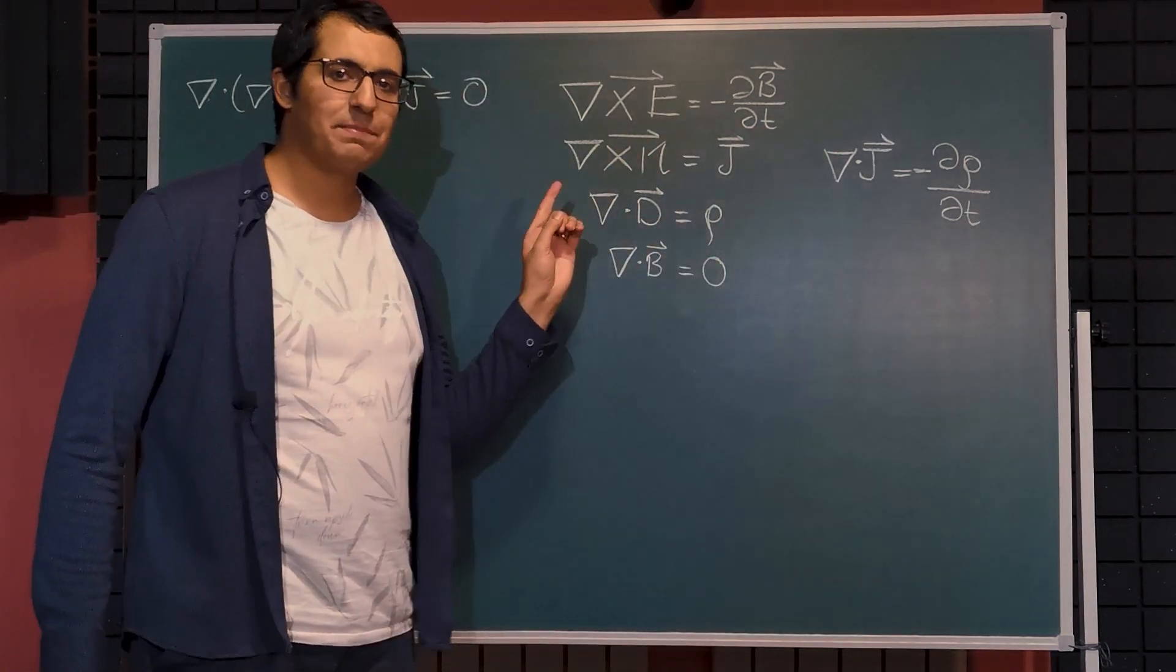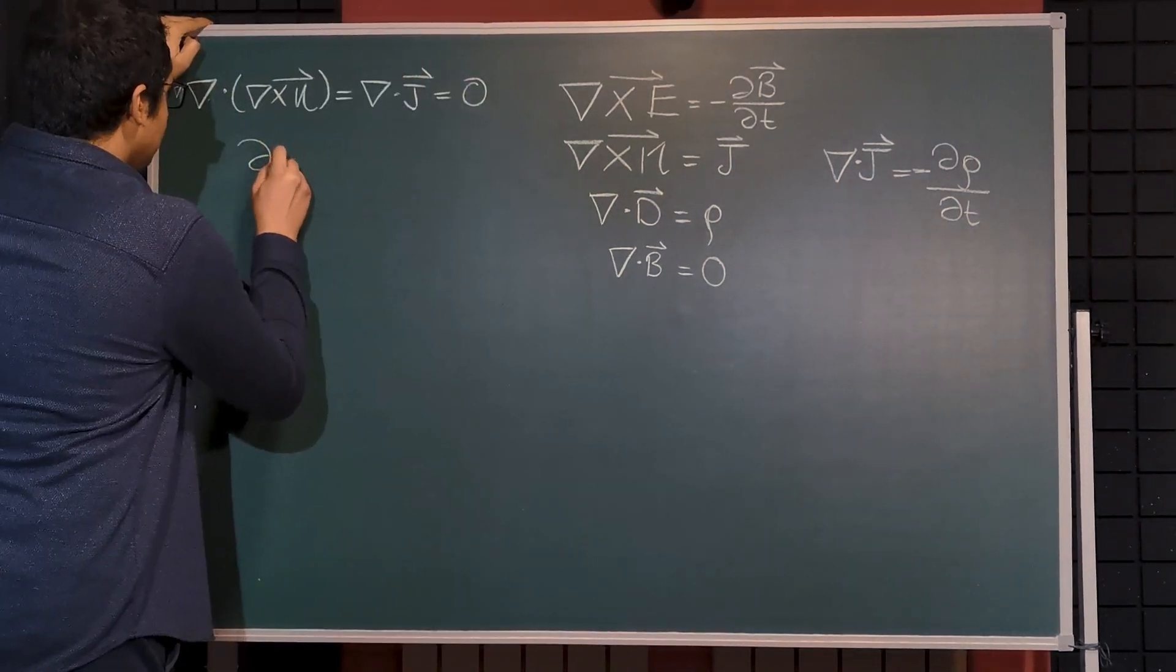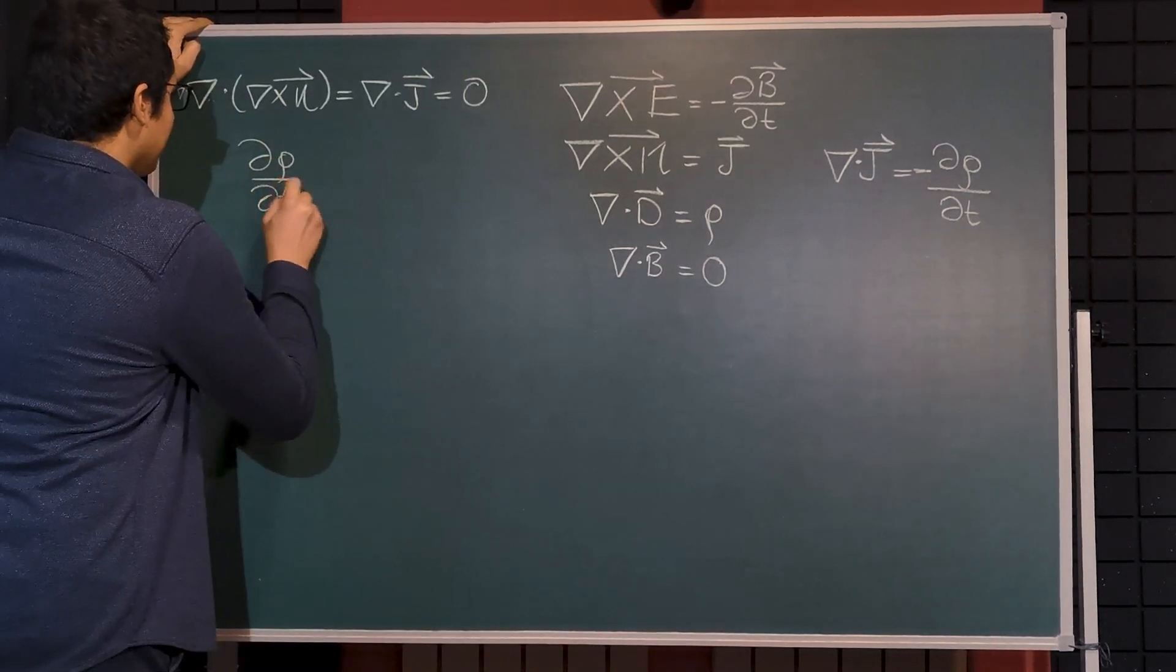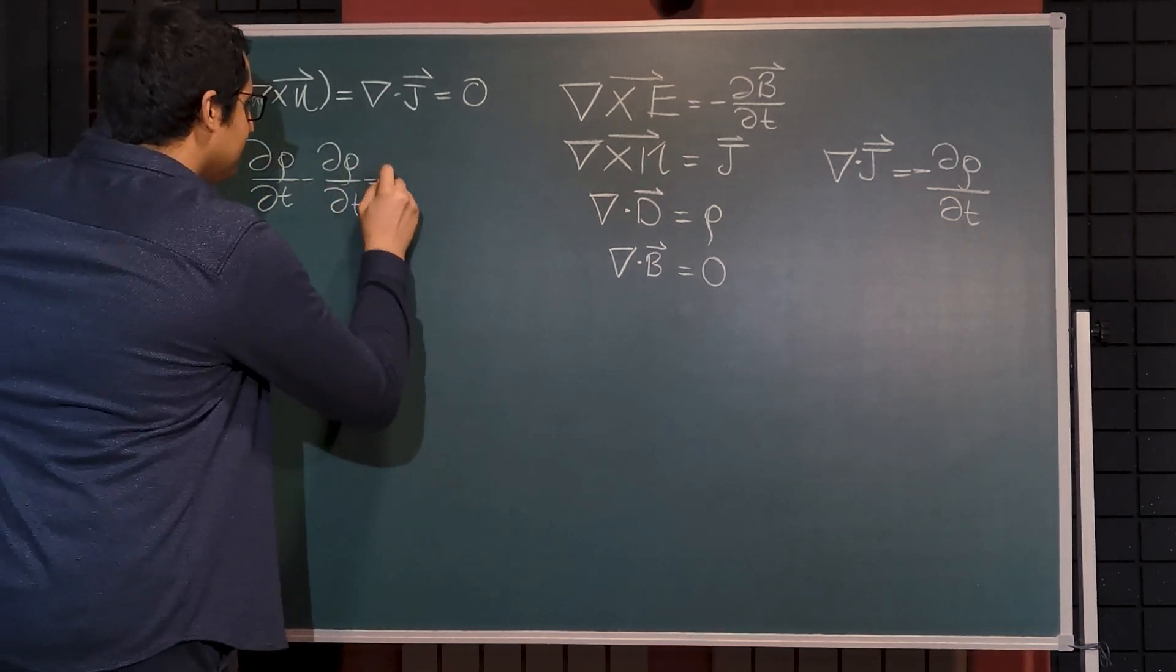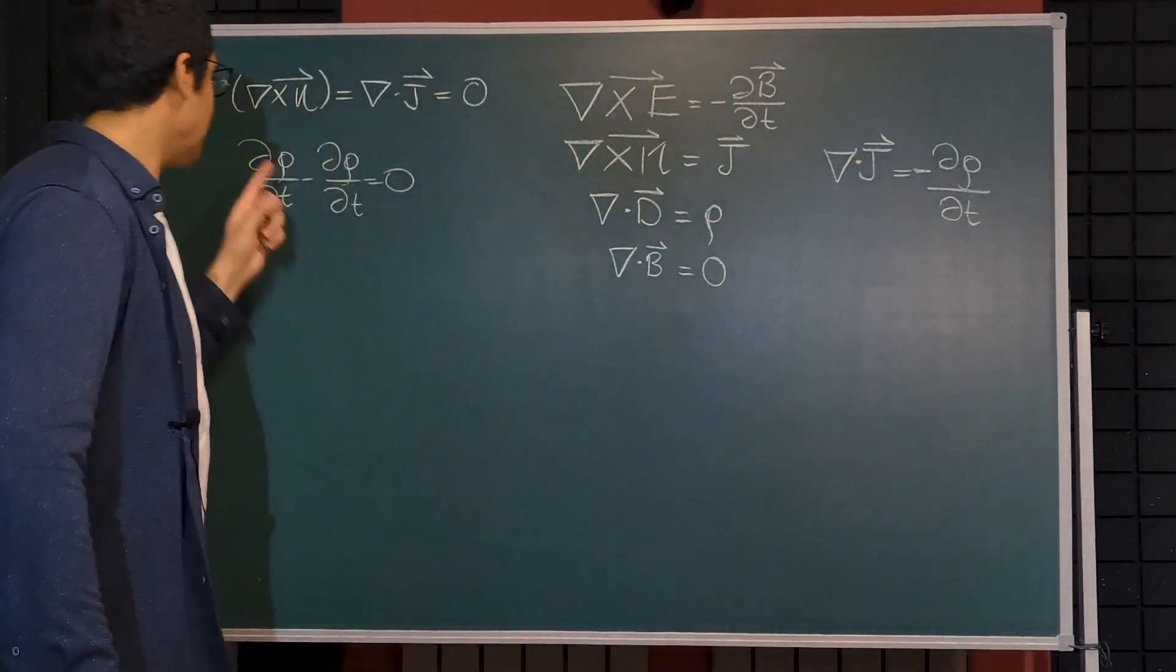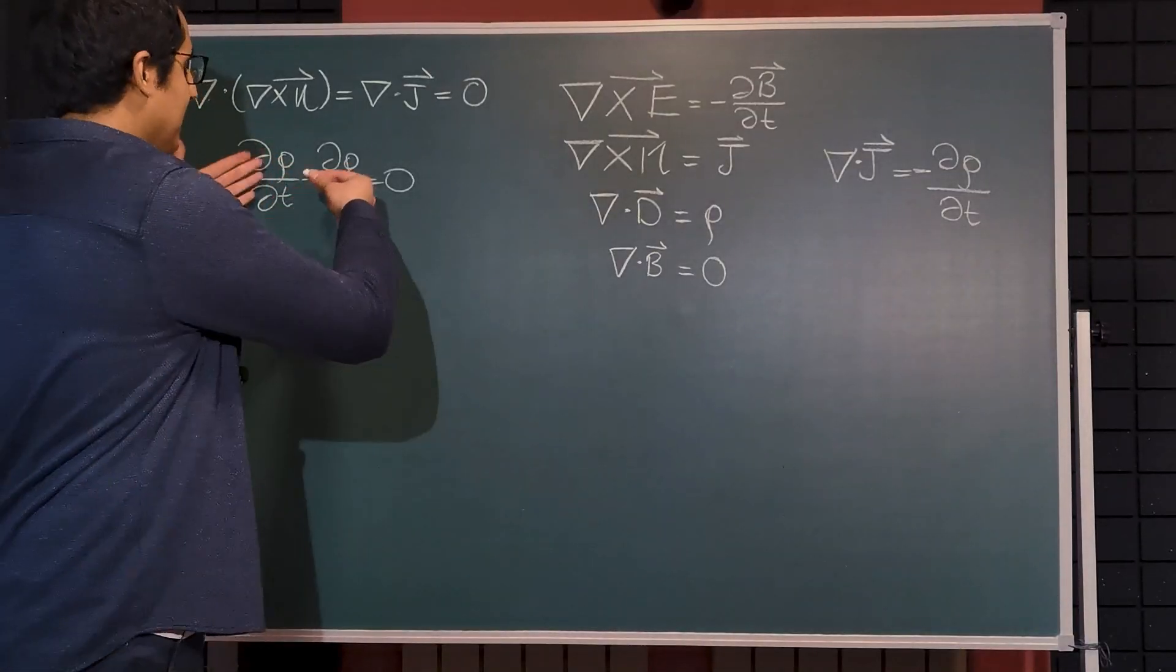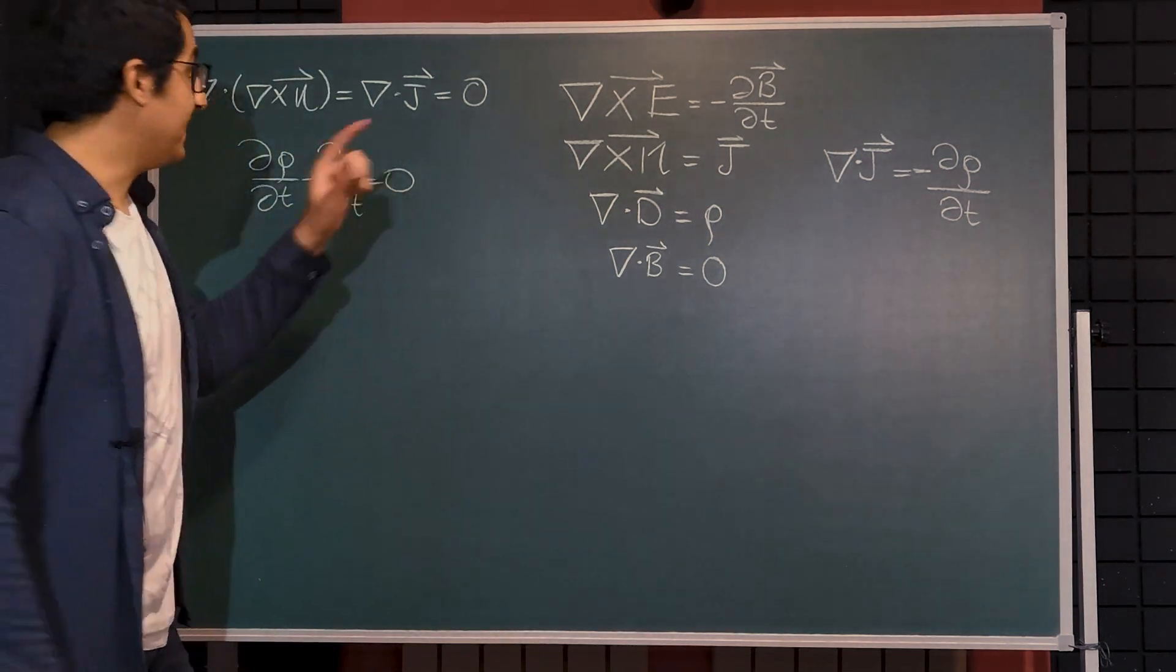So in this case, we can apply a clever trick to equation two and say that when partial ρ partial t minus partial ρ partial t is equal to zero, does not literally mean that charge densities are zero. Charge densities can be anything and this equation will again be zero.